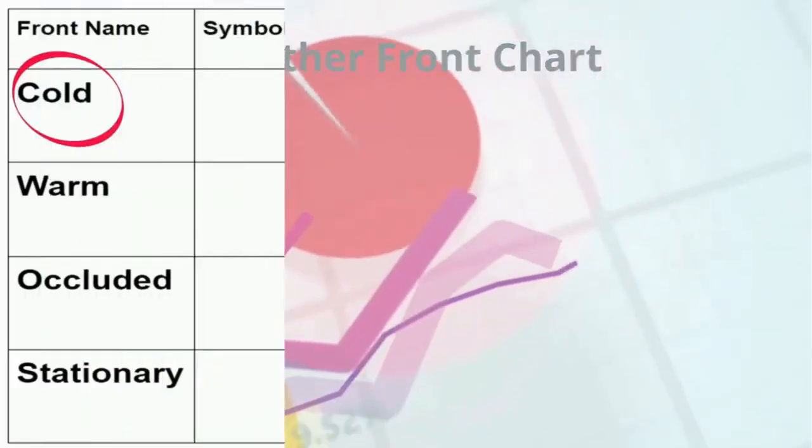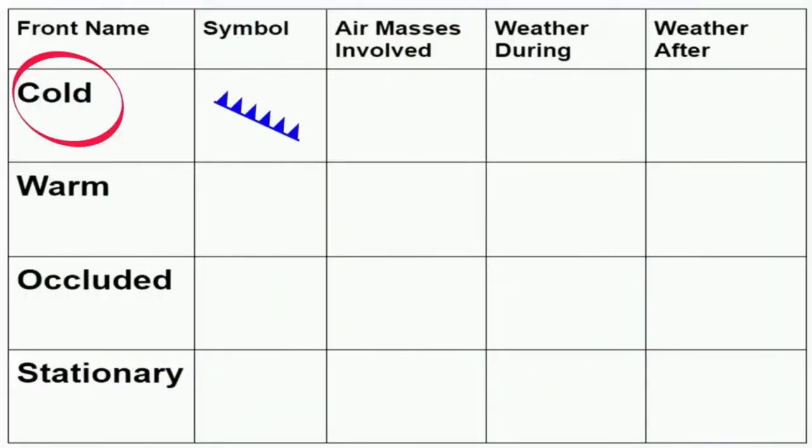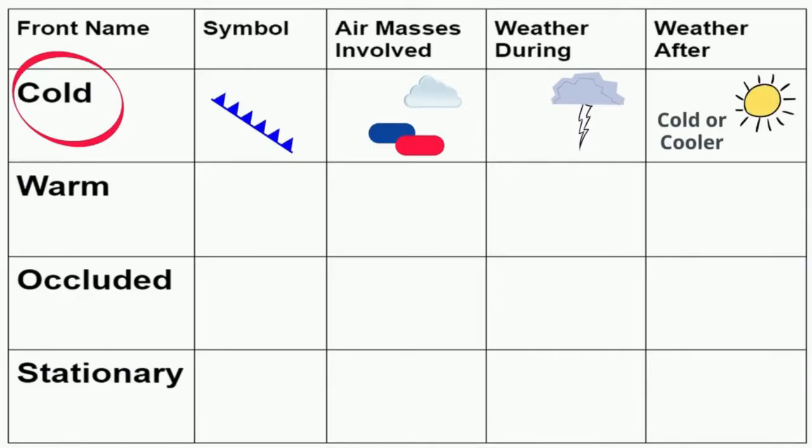Up first is a cold front. Here's the symbol. Notice it contains blue triangles. The air masses involved are cold air mass meets a warm air mass. The warm air mass is less dense than the cold air mass and rises quickly. The weather along a cold air mass may involve thunderstorms and possibly severe weather. As the front passes you will see colder more dry air and fair to clear skies.